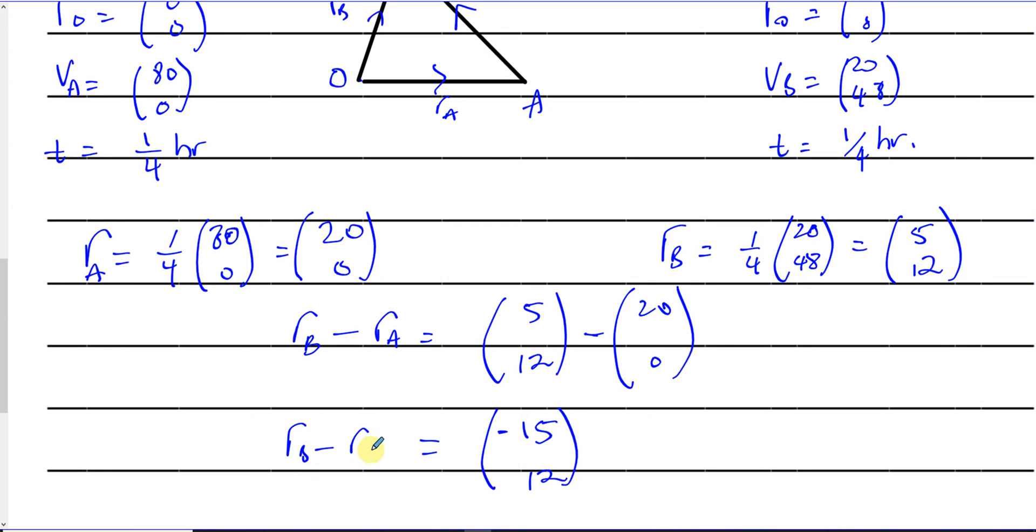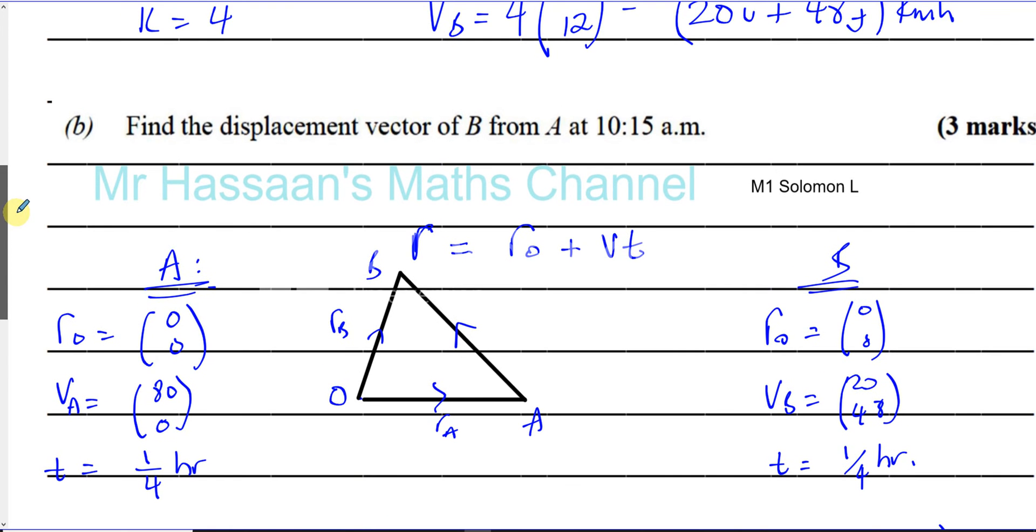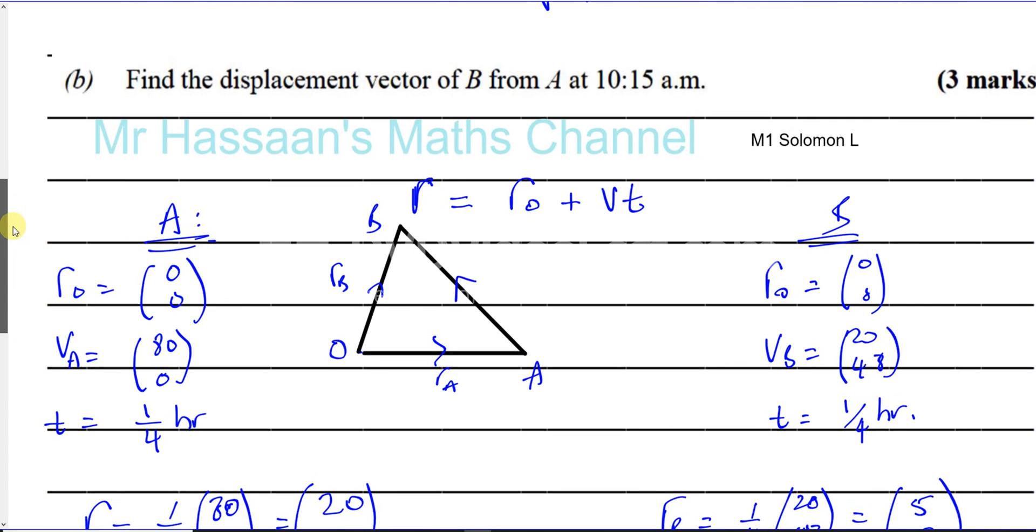So there is the answer for what they're asking us to find here. Minus 15, 12. That's for part B. So that's the displacement vector of B from A at 10:15 AM. That's part B done.